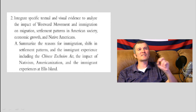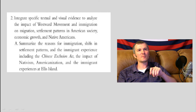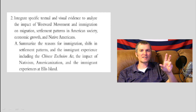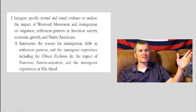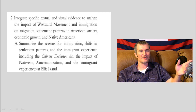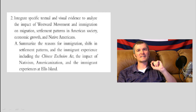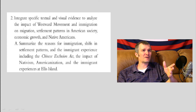So number two: integrate specific textual and visual evidence to analyze the impact of Western movement and immigration on migration, settlement patterns in American society, economic growth, and Native Americans. Now these first sections, most students don't ever really see these for themselves. They're always really big and scary looking — what are these even talking about? They're always very vague. It's these little sub-sects you have to really look at, and even these don't make a lot of sense.